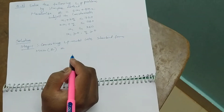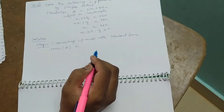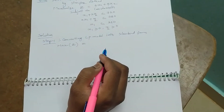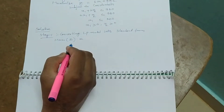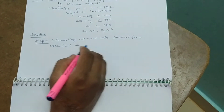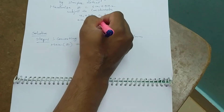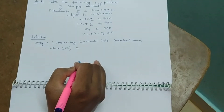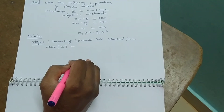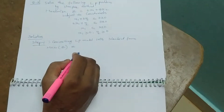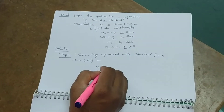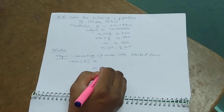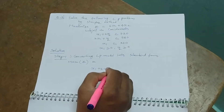In order to solve this problem using the simplex method, we need to follow a step-by-step procedure. Step one is converting the linear programming problem into standard form. To convert it, we need to add slack variables to the left-hand side, removing the inequalities.